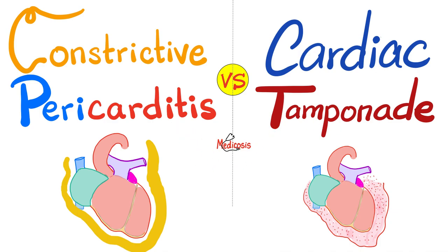These two diseases have many similarities but also many differences. In constrictive pericarditis, I have a very thick calcified pericardium around the heart — hard as a rock. In cardiac tamponade, I have fluid accumulating in my pericardial sac, also around the heart. Both of them can lead to extracardiac obstructive shock with hemodynamic instability, hypotension, tachycardia, etc.